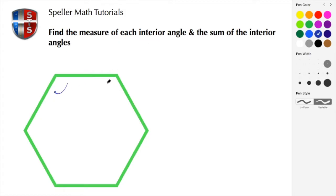Since it's regular, we know that each one of these interior angles has to be the same measure, and we're also going to find the sum of the angles. With a regular polygon, all of the sides are also congruent in length.